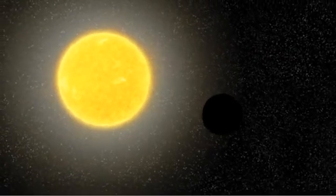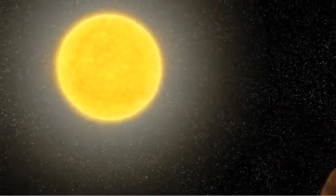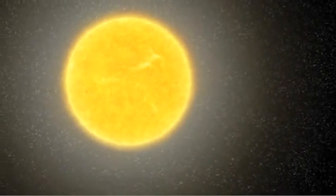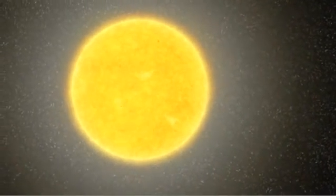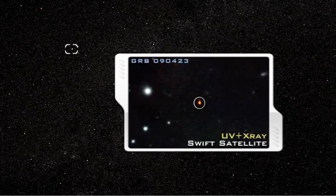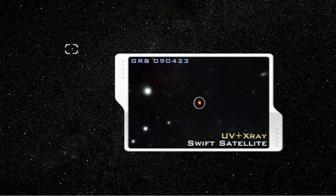Gamma ray bursts are the most energetic and luminous electromagnetic events since the Big Bang and can release more energy in 10 seconds than our Sun will emit in its entire 10 billion year expected lifetime. NASA's SWIFT satellite recorded this gamma ray burst of an exploding star 13 billion light-years away.